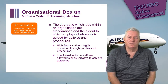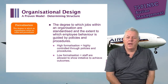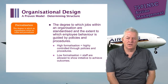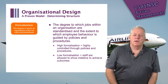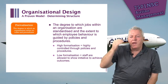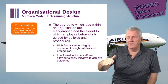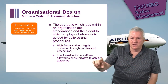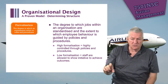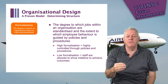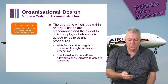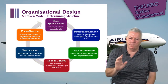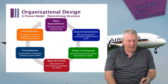Formalization is the degree to which an organization relies on rules and procedures. High formalization means staff are highly controlled through policies and procedures; low formalization allows staff to show initiative to achieve outcomes. When Bethune took over Continental Airlines, it had high formalization — staff had very detailed procedures to follow and weren't allowed to show initiative. He changed it to a low formalization model where staff were allowed to show initiative to achieve the organization's outcomes. That completes the determining structure model: work specialization, departmentalization, chain of command, span of control, centralization, and formalization.